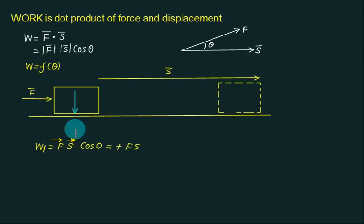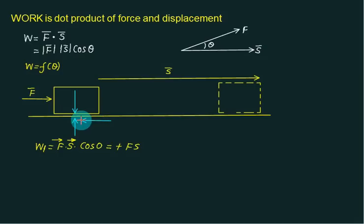The weight will act in the downward direction, the normal reaction will act upward, and the direction of motion is horizontal. The friction force acts in the opposite direction of motion. So we have: weight acting downward, normal reaction acting upward, and friction force acting opposite to displacement.